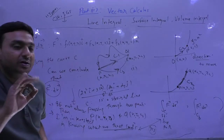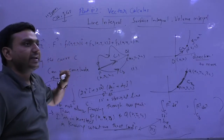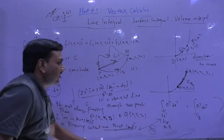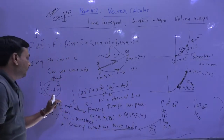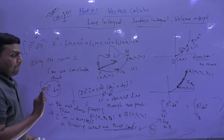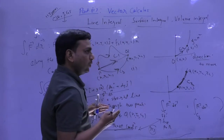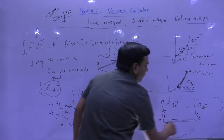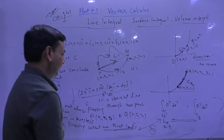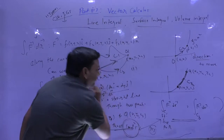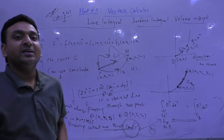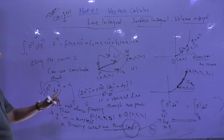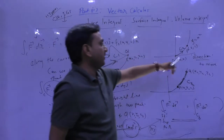So the three targets of this class are: number 1, calculating the line integral; number 2, calculating the line integral from different paths; number 3, understanding when the line integral of f vector dot dr vector from P to Q following different paths gives the same result — what are the conditions for that?